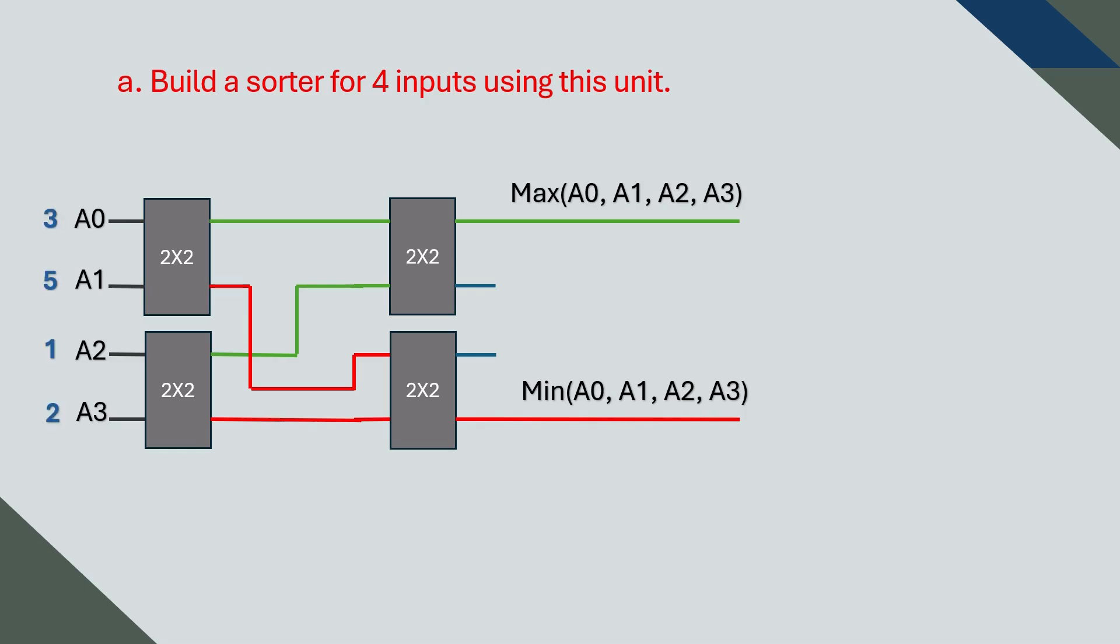Let's run an example with the values 3, 5, 1, and 2. After passing them through our sorter, we get the correct minimum and maximum. But if we look closely, the two middle values are not yet sorted.